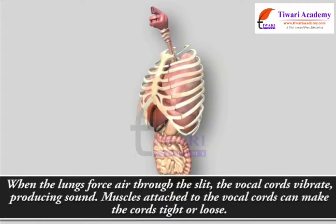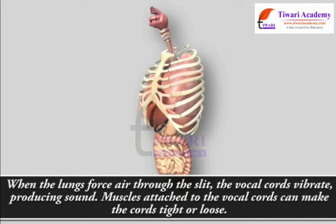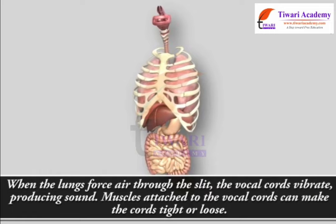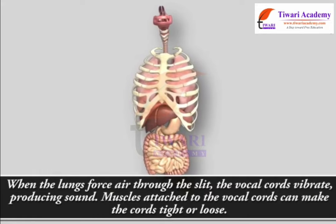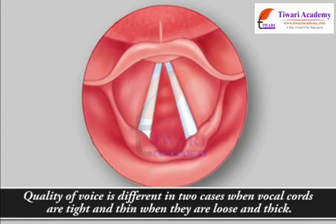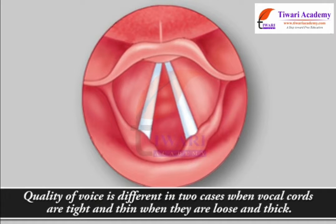When the lungs force air through the slit, the vocal cords vibrate, producing sound. Muscles attached to the vocal cords can make the cords tight or loose. The quality of voice is different in two cases: when vocal cords are tight and thin, and when they are loose and thick.